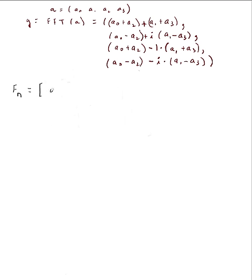Each element of the matrix is an nth root of unity, where the exponent is the row value times the column value — rows and columns both beginning at zero. We're not talking about imaginary numbers here; we're talking about the row and column indices. We use mod n wrap-around.